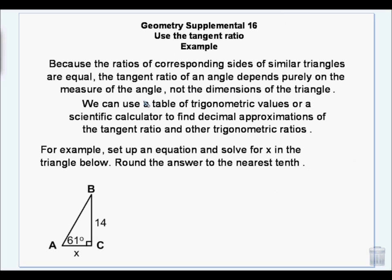So the tangent ratio of an angle depends on the measure of the angle, because they're proportionate. So we're going to solve for x here. So what I have is, I've got this angle. So I have the tangent of 61 degrees is equal to opposite over adjacent. So I'm going to multiply both sides by x. And then I'm going to divide both sides by the tangent of 61.